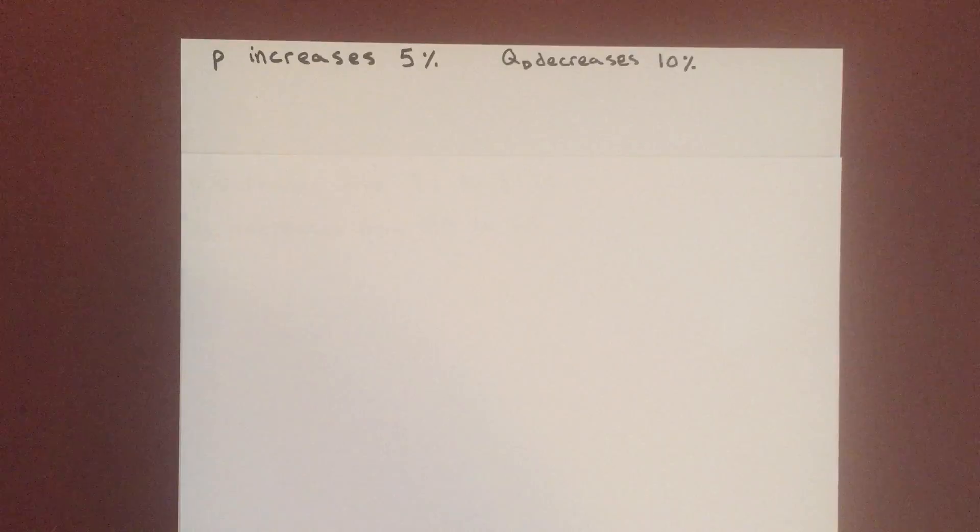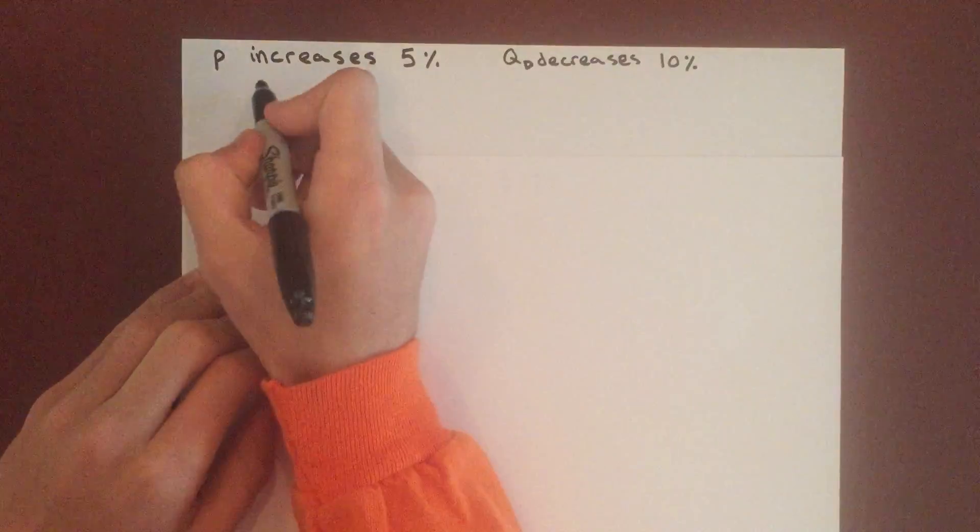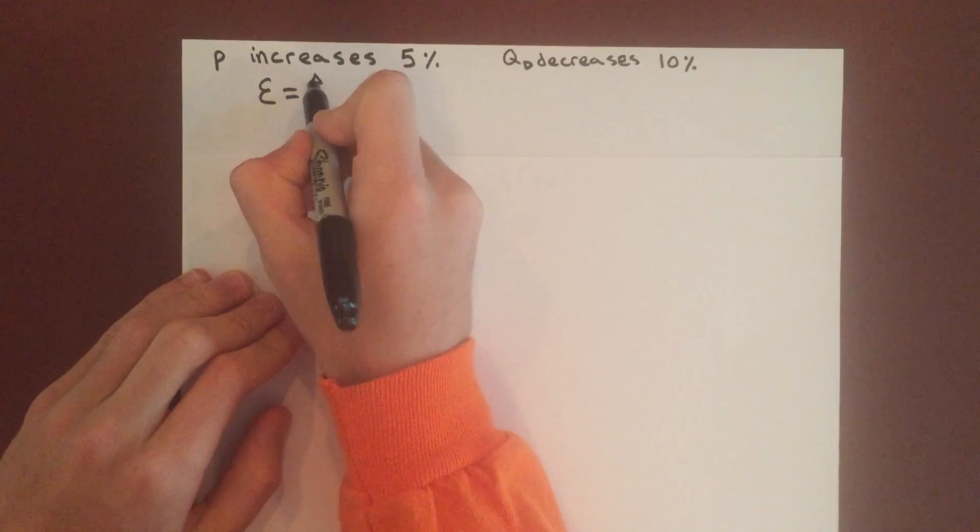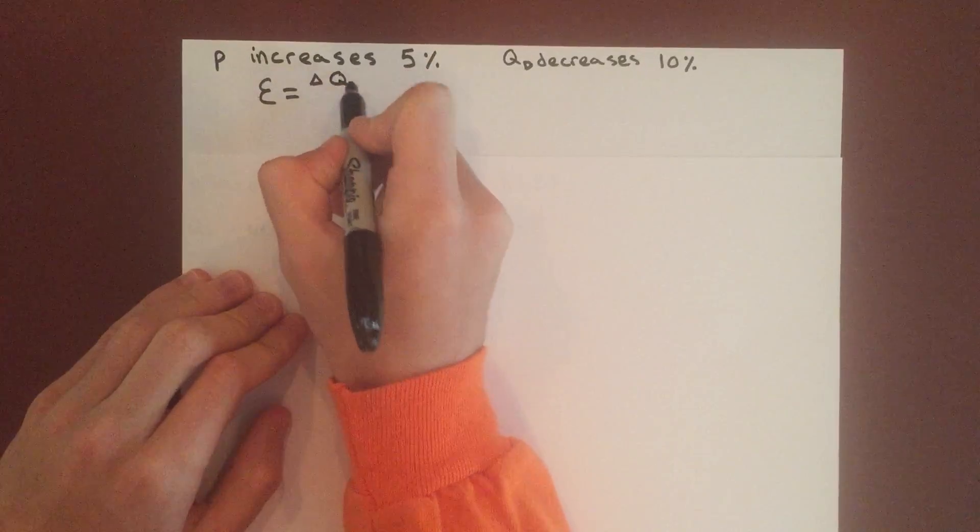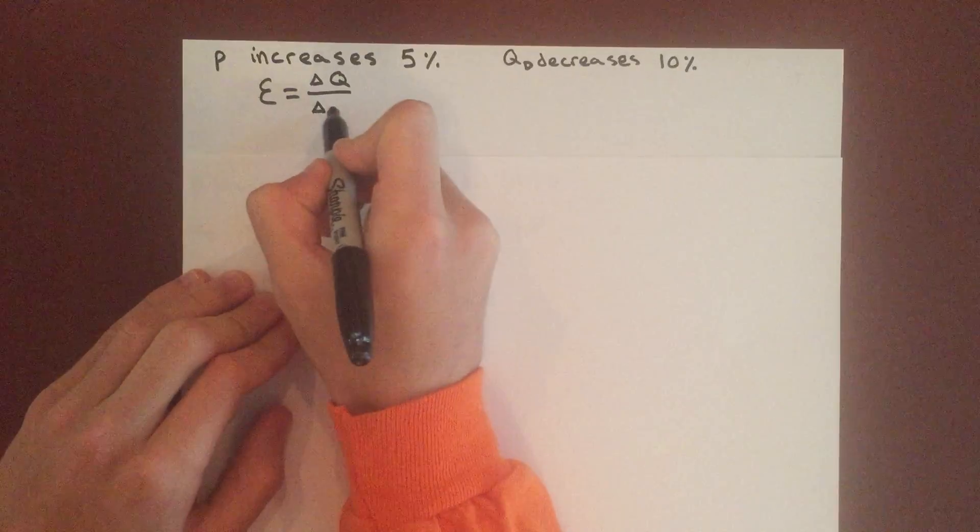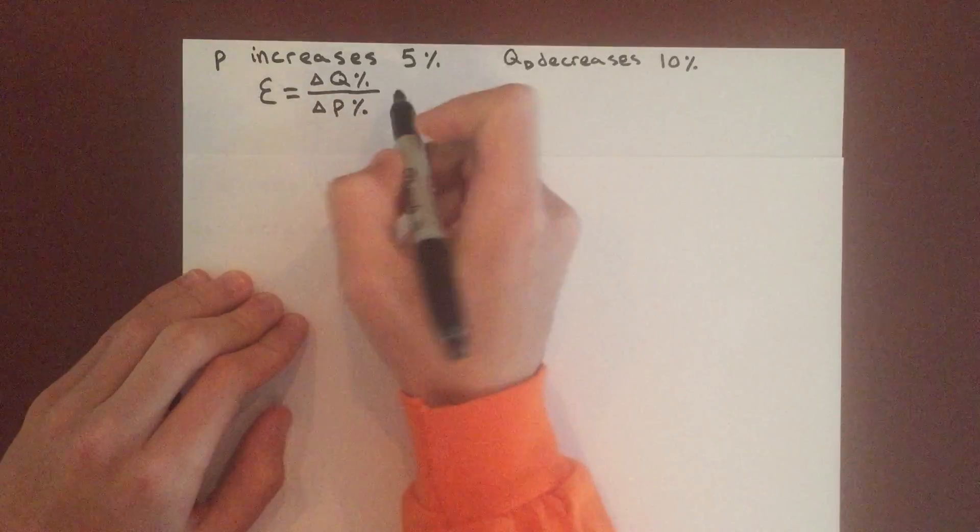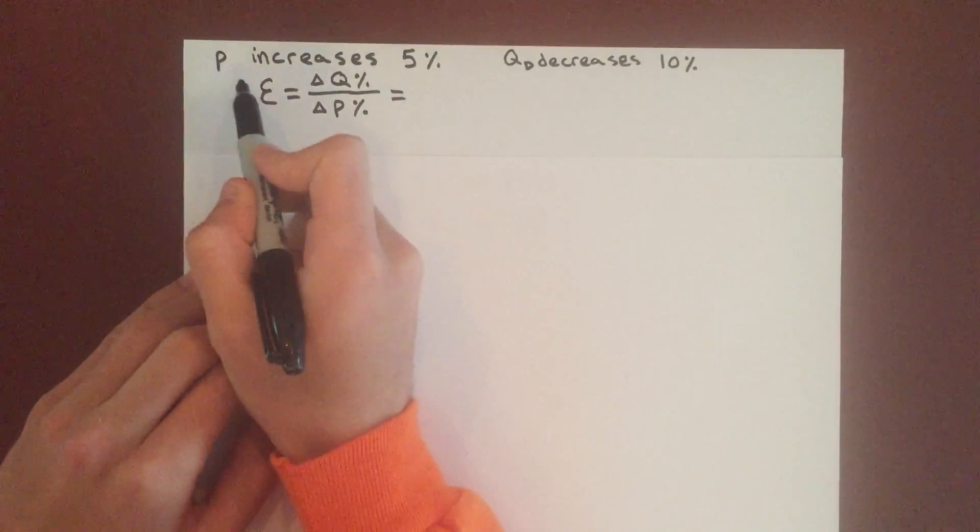In these examples, we're going to look at elasticity of demand using algebra instead of calculus. The important thing to remember with elasticity is that it's the change in quantity over the change in price, but both in terms of percentages. That's the key factor.